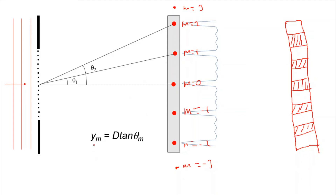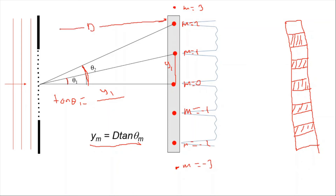For the location of the bright spots, since these angles can be large we are not going to use small angle approximation. The distance y of the first bright spot from the center satisfies: tangent of theta one equals y1 over d, where d is the separation between the slits and the screen. Generally, y_m equals d times tangent theta_m.